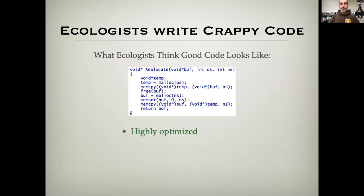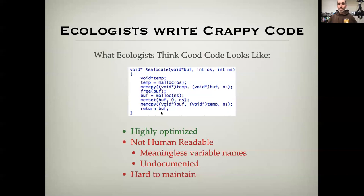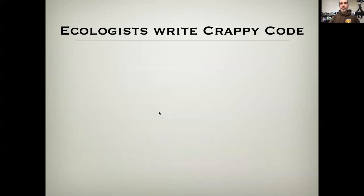But I would argue the code like this that has the positive of being highly optimized actually isn't good code. This code is not human readable. The variable names are meaningless. The code is undocumented as to what it's doing. And because of that, this sort of code is going to be hard to maintain. Any kind of efficiencies that are gained from being clever are probably going to be lost in the time it takes to set up and maintain the code. For most projects that ecologists work on, you spend far more time writing the code than the code ever spends running. That ability to maintain code 90 plus percent of the time is the bottleneck.